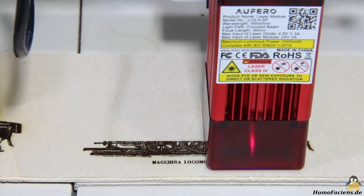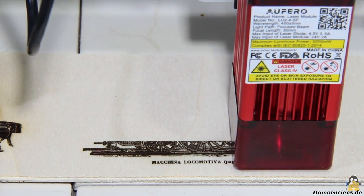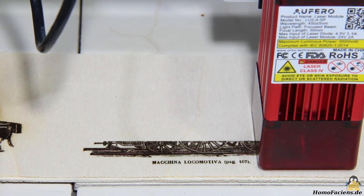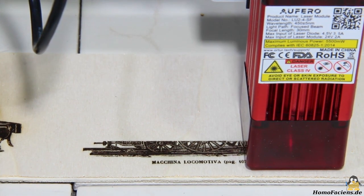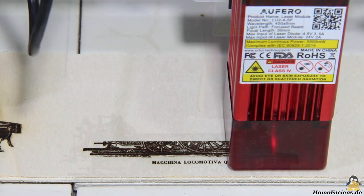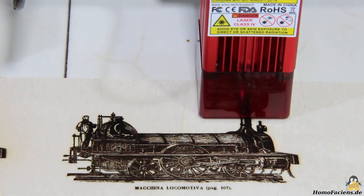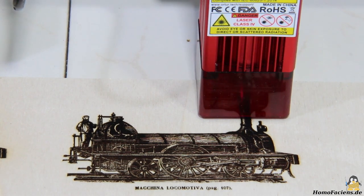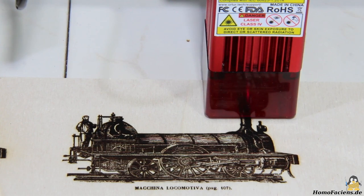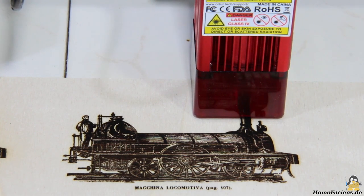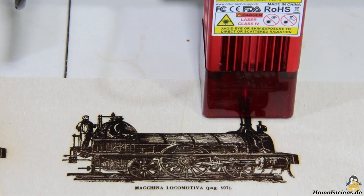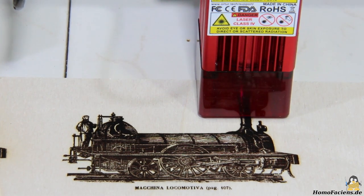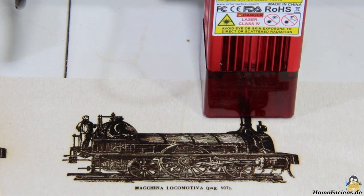The laser power applied to the wood corresponds roughly to that of the previous module with the long focal length, so the power is also set to 20%. Since the laser beam of this module is focused on an even smaller area, I have now loaded a higher resolution graphic and reduced the grid size to only 0.054mm. With the same total dimensions, the graphic is now burned onto the wood with 450 dpi. The job takes significantly longer, but the result is also significantly more detailed.